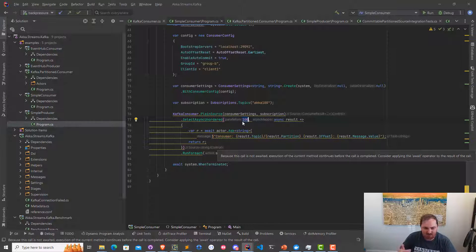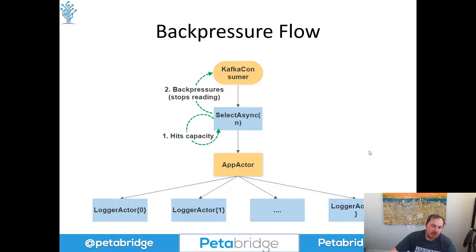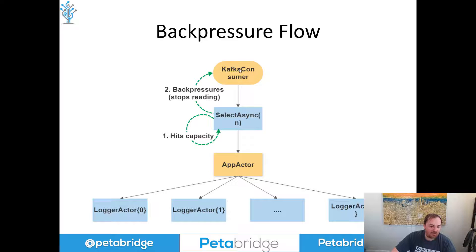Let's take a look at what my actual flow of execution looks like now that I've introduced these changes. Back in PowerPoint, this is what our graph now looks like: we have this additional SelectAsync stage sitting in the middle with a finite amount of capacity N. When we hit that capacity, the Kafka consumer is going to have a little dead-man switch built into it — it's going to notice that this stage in Akka Streams is no longer demanding additional events. So it's going to pause reading from Kafka for the time being, telling the Kafka consumer to stop polling for events on this particular topic.